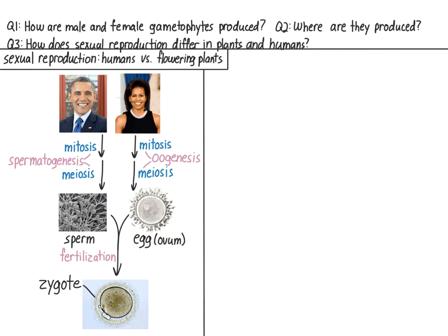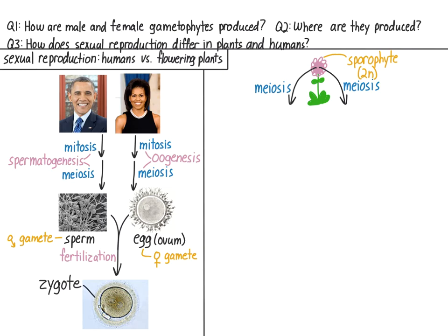Let's start with something you're already familiar with — sexual reproduction in humans — and compare it to sexual reproduction in flowering plants. Recall that when human diploid cells go through meiosis, the products of that meiosis are the gametes: the sperm and the egg. But in flowering plants, when diploid cells of the sporophyte undergo meiosis, they don't produce haploid gametes. Instead, meiosis produces haploid cells called spores, which can be male or female.